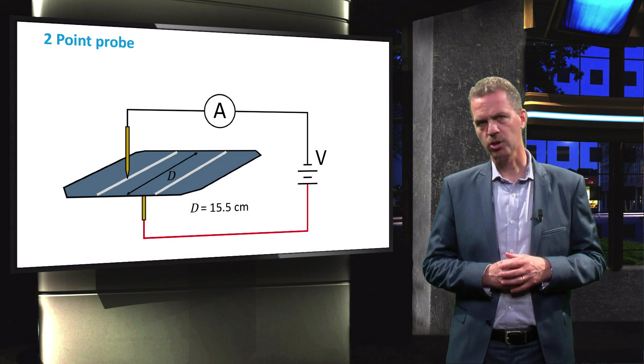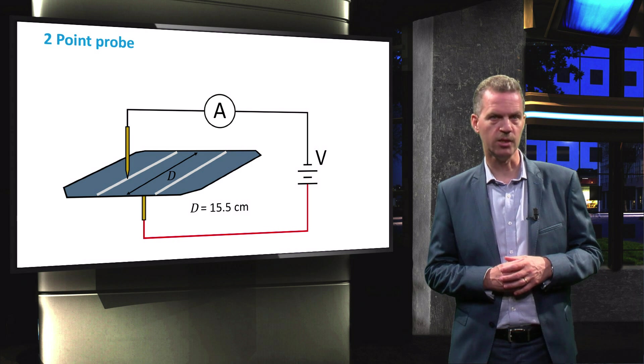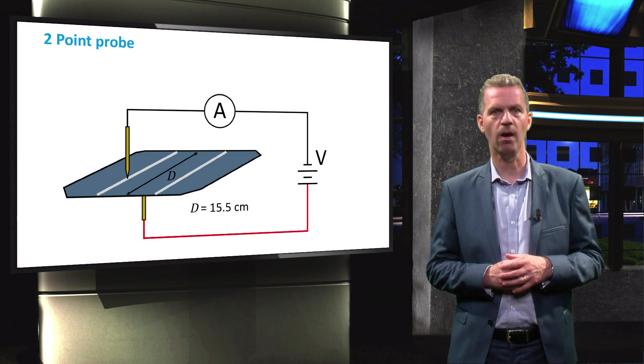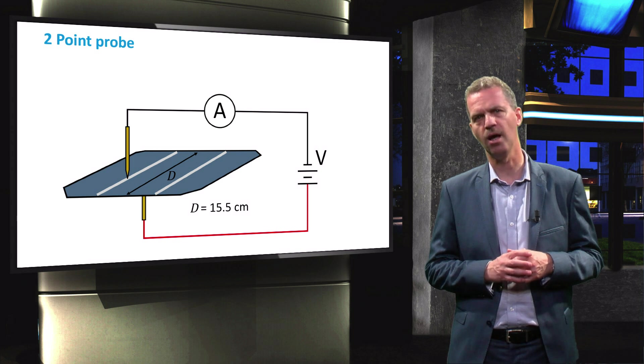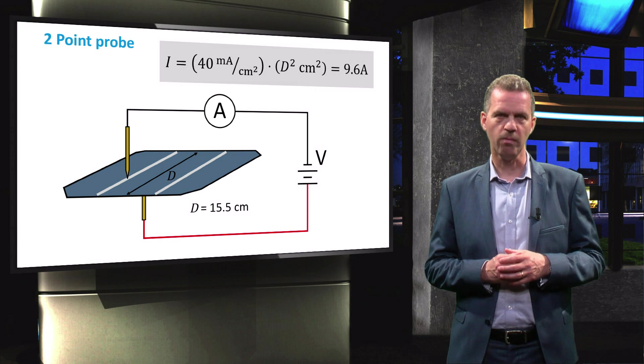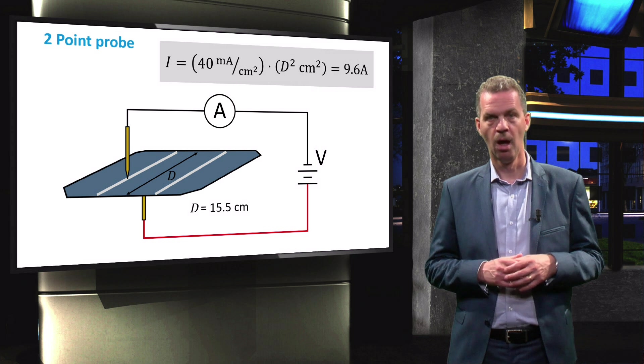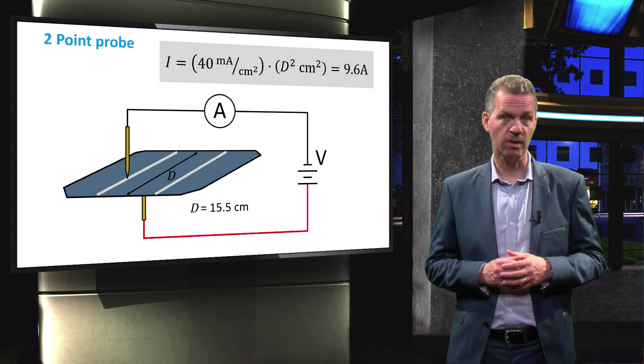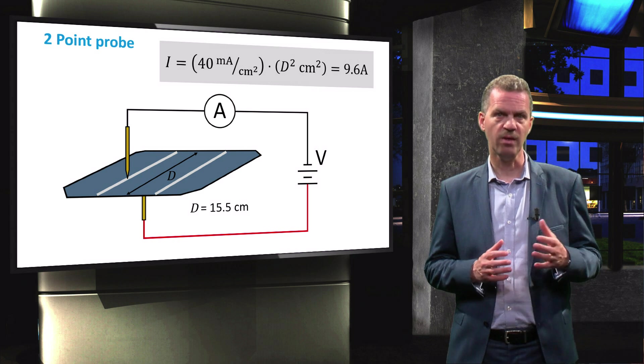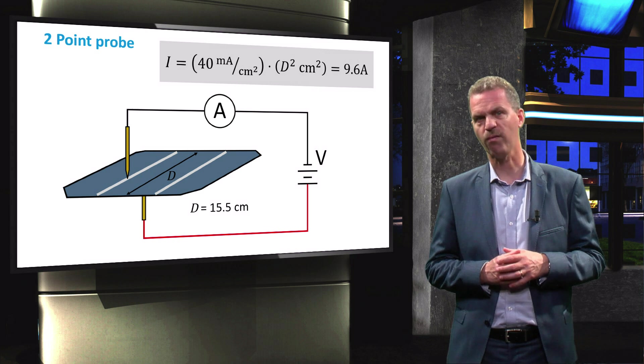A quick calculation shows what current flows we can expect from a single 6-inch crystalline silicon wafer-based solar cell under one sun illumination. The short-circuit current density for a good-performing cell can be up to 40 mA per square centimeter. With an area of about 225 square centimeters, this gives a total of 9.6 amperes of current.